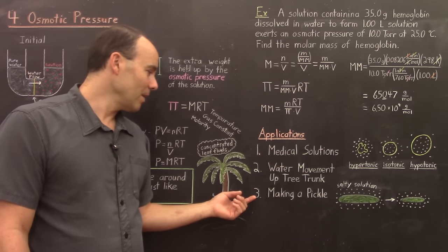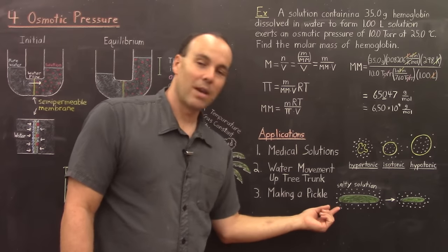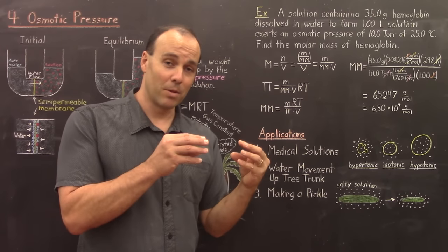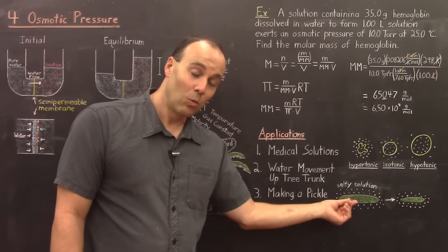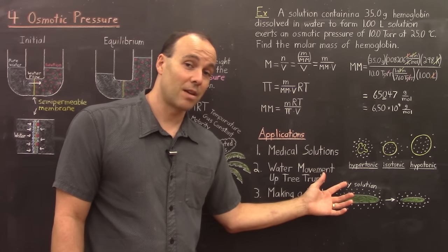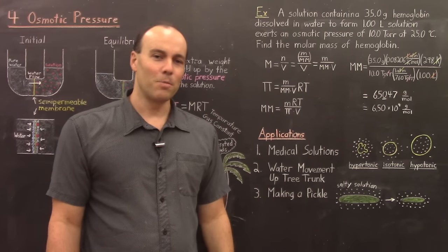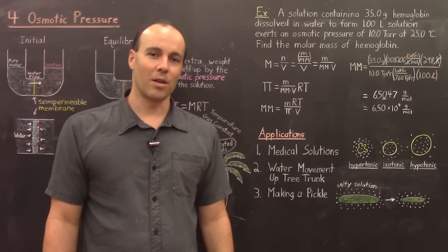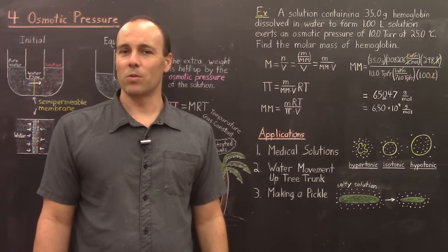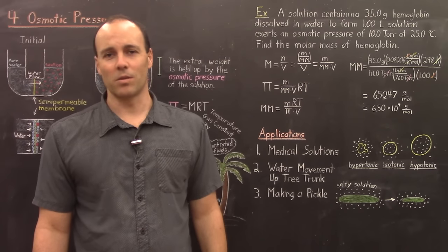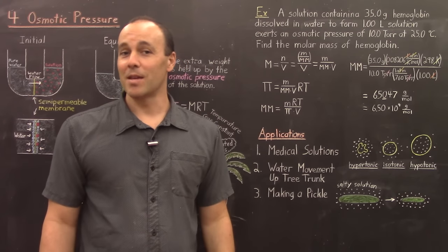The last application is making a pickle. A cucumber's skin coating acts as a semi-permeable membrane. Surrounding the cucumber with a salty solution causes water inside the cucumber to travel outward through the membrane toward the salty area, so the cucumber shrivels up — and that's how you make a pickle. I hope you have enjoyed this lecture on the colligative properties. This closes our second portion of the course on solutions. In the next portion, we move toward chemical reaction rates, which deals with how fast a chemical reaction goes. Stay tuned, and aloha.